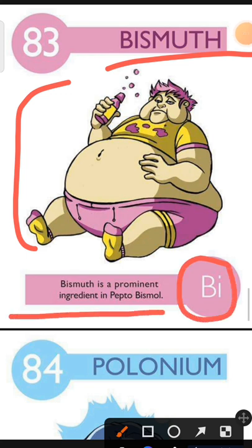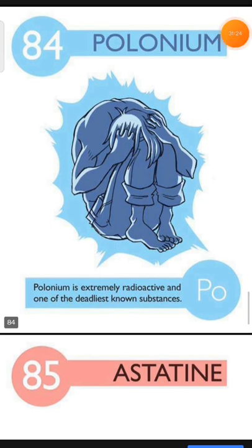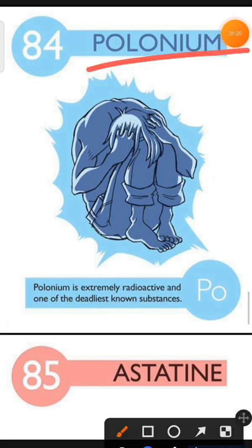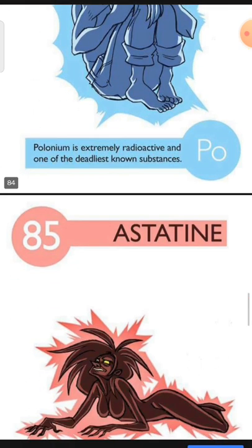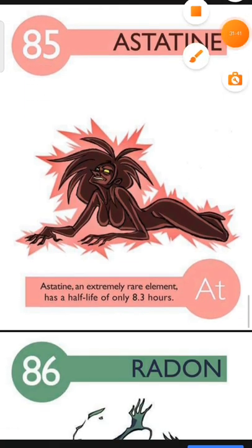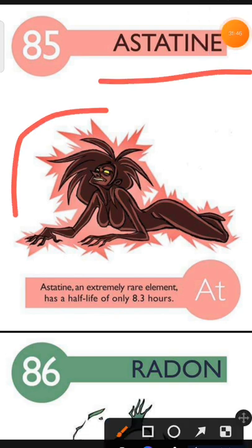Element number 84 is Polonium. The characteristic of Polonium is: Polonium is extremely radioactive and one of the deadliest known substances. Element number 85 is Astatine. The characteristic of Astatine is: Astatine is an extremely rare element and has a half-life of only 8.3 hours.